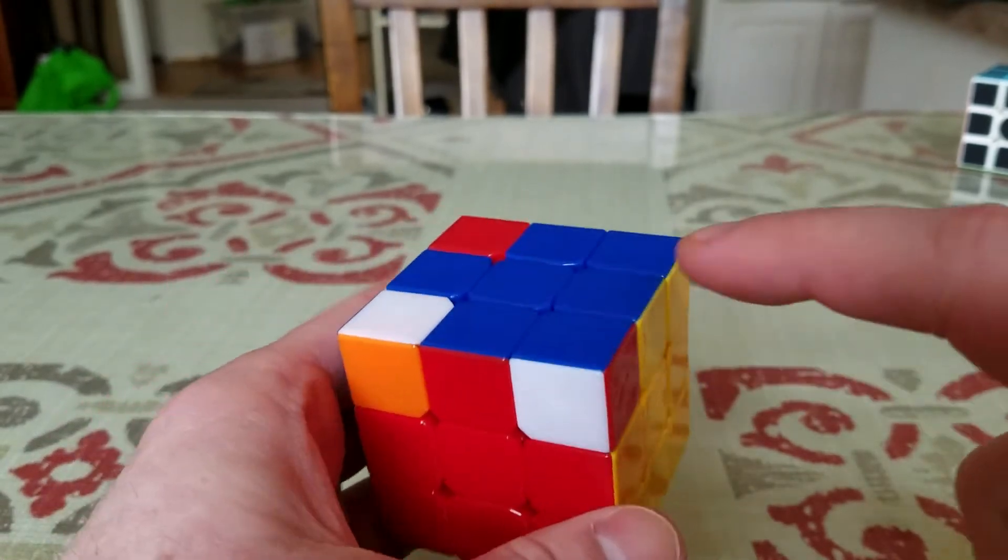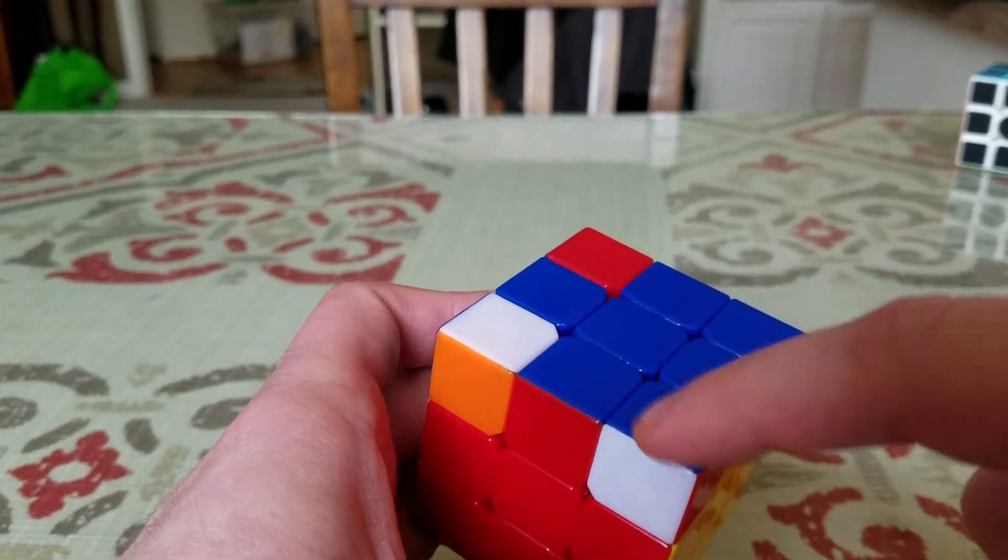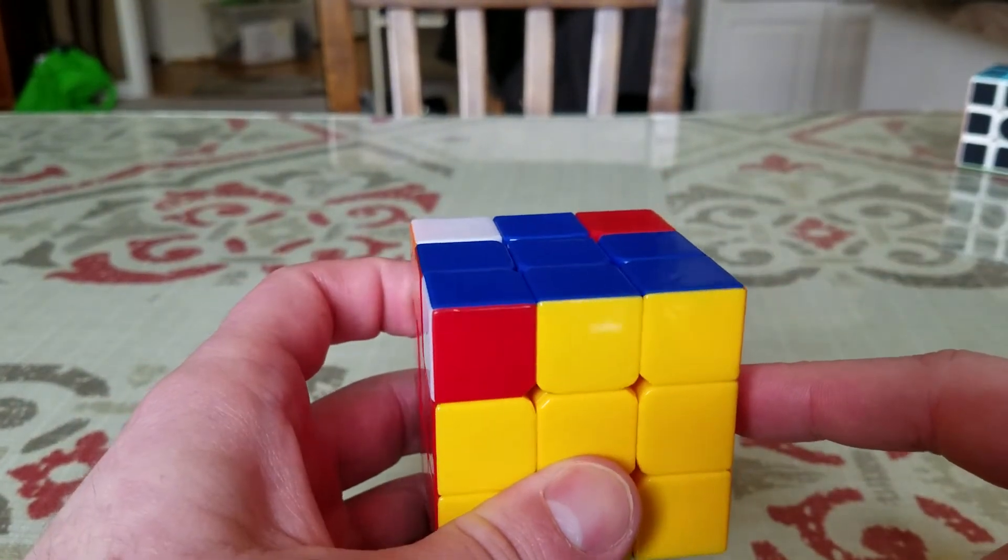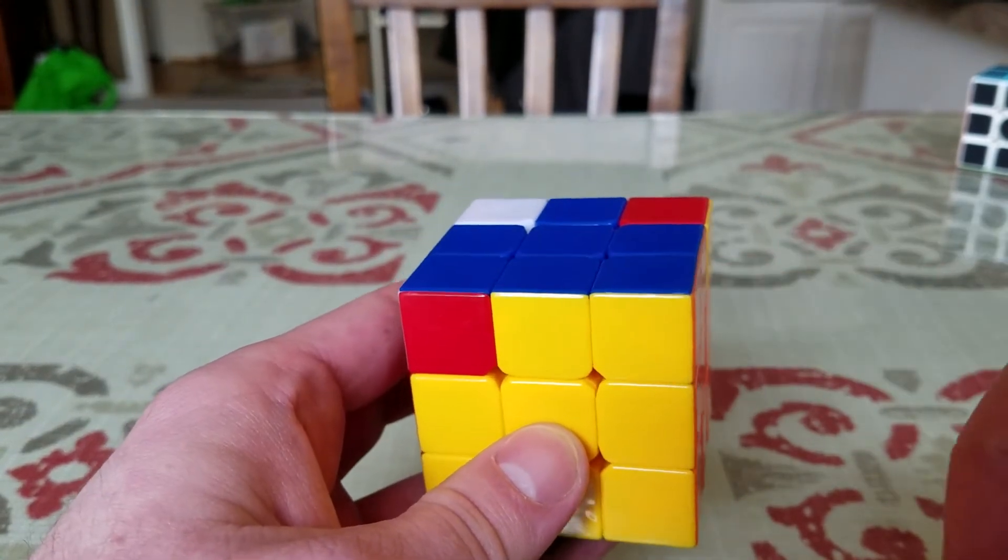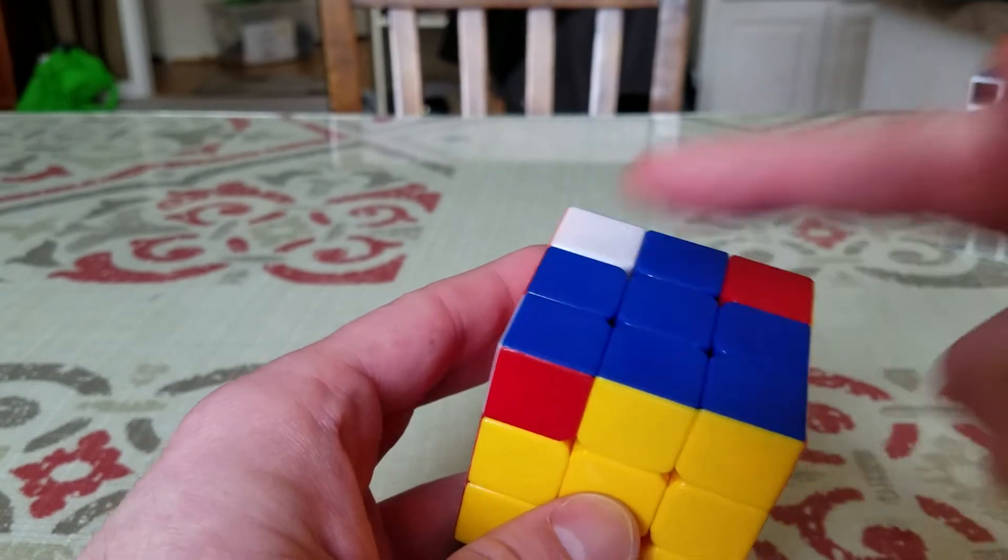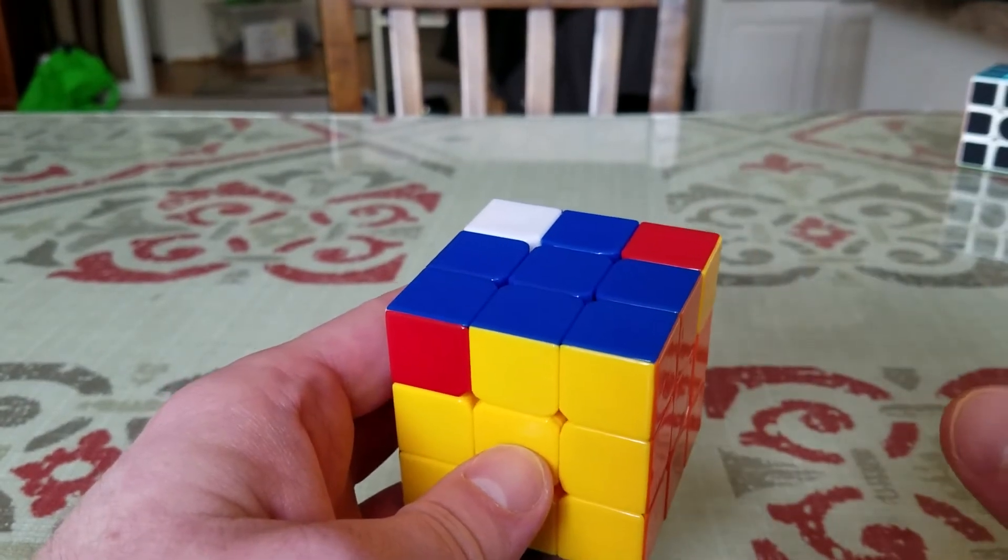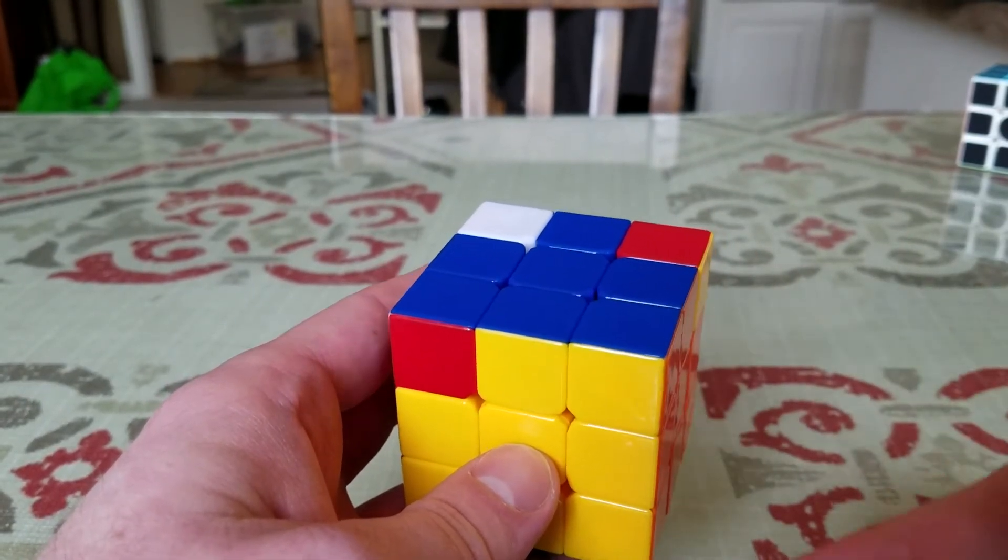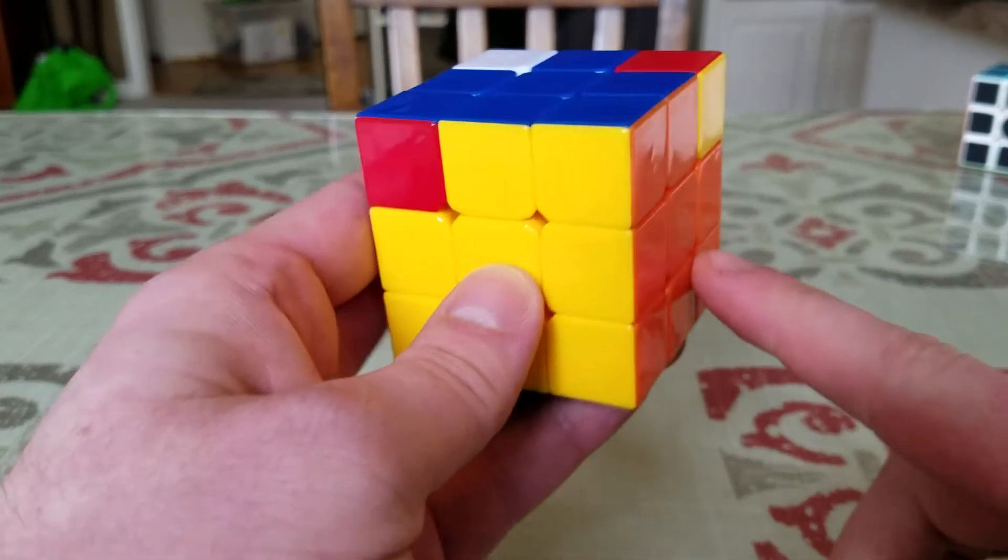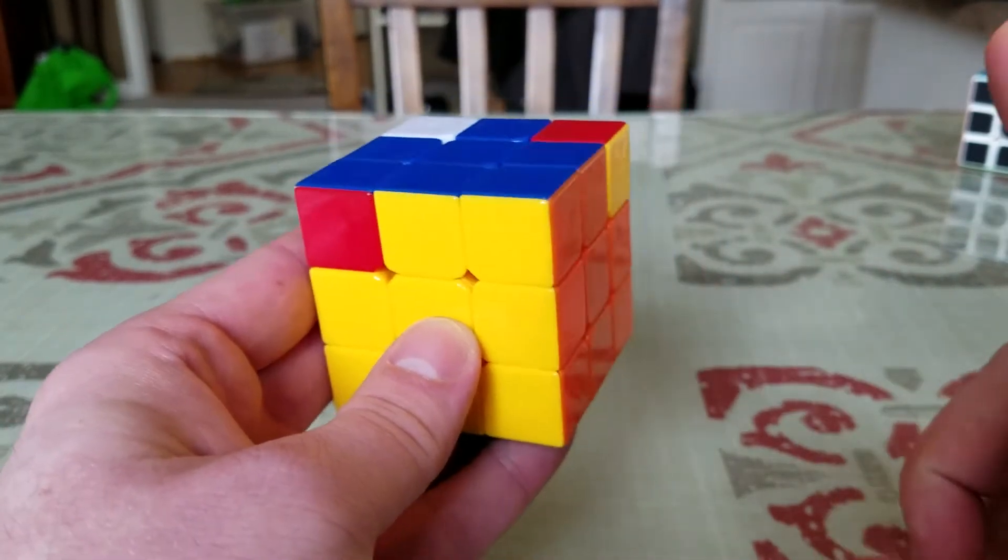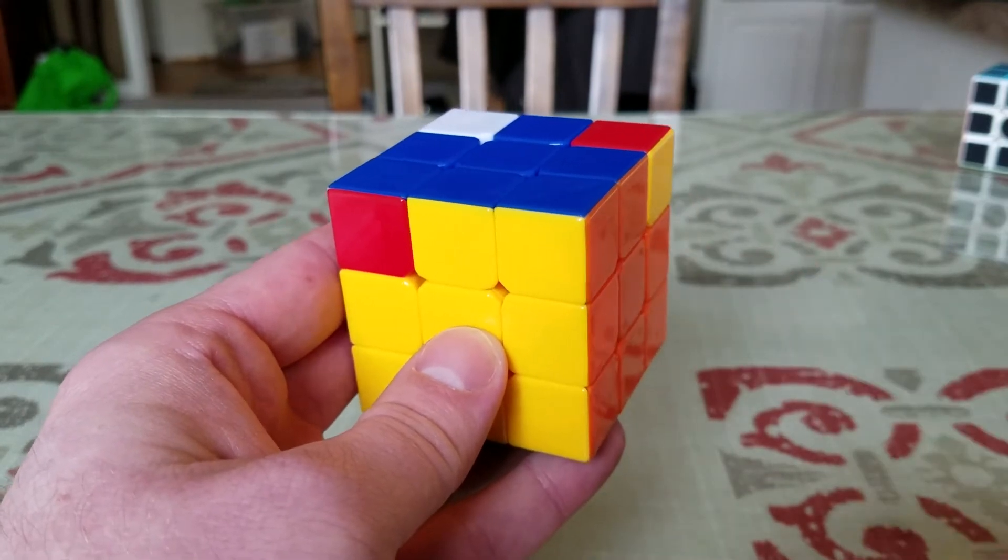So what we need to do is sometimes you're going to need to move some of these corners around. Usually when you get to this step, you will have at least one corner that's already in the right position. You may not have one that's in the right position, and if you don't, you perform this move once and it will put one of them in the right position. But assuming that you have one in the right position, most of the time you'll have one in the starting right position.